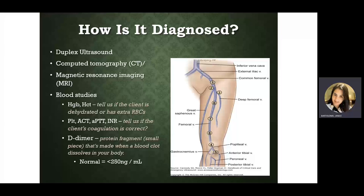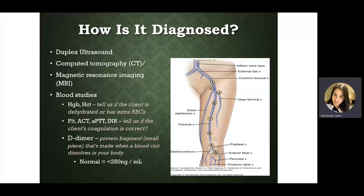The INR tells us how thin or thick the blood is, while ACT and PTT measure in seconds how long it takes someone to clot. There's also the D-dimer test — a protein produced when a clot is dissolved. It should be less than 250 nanograms to be normal; if elevated, we suspect a clot. CT or MRI is used for something really deep like clots in the lungs, but typically an ultrasound is the easy go-to.